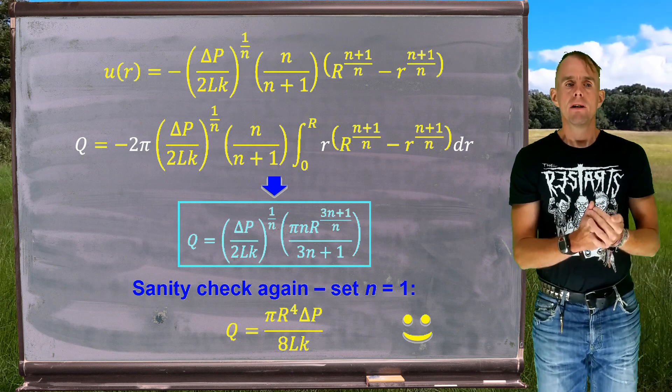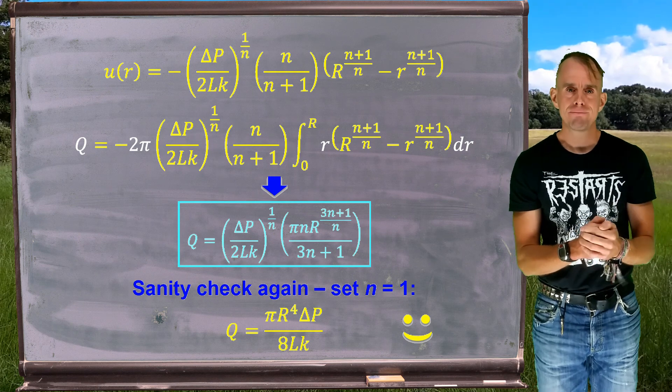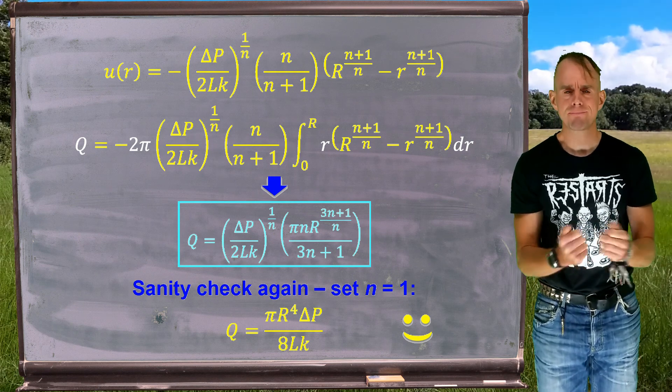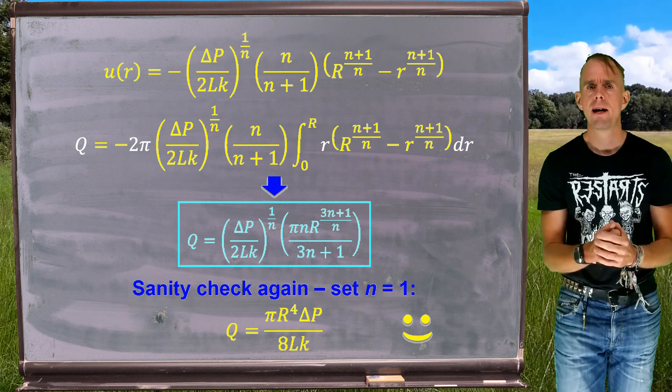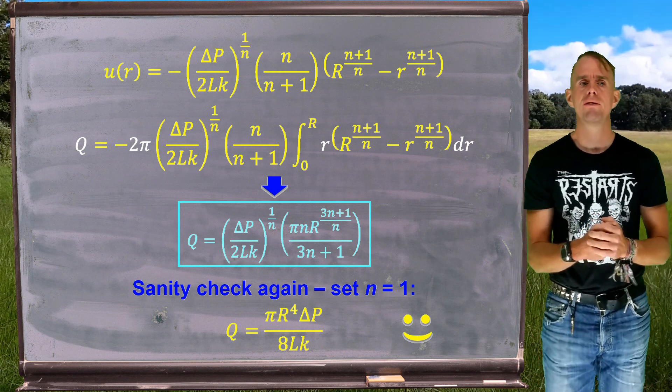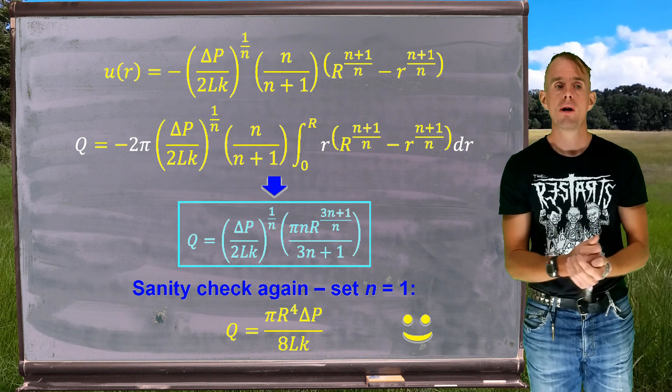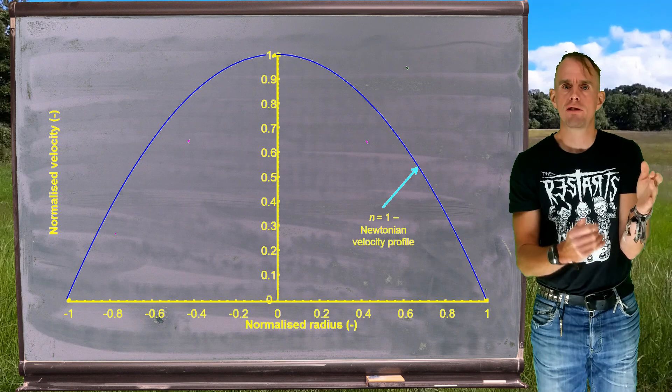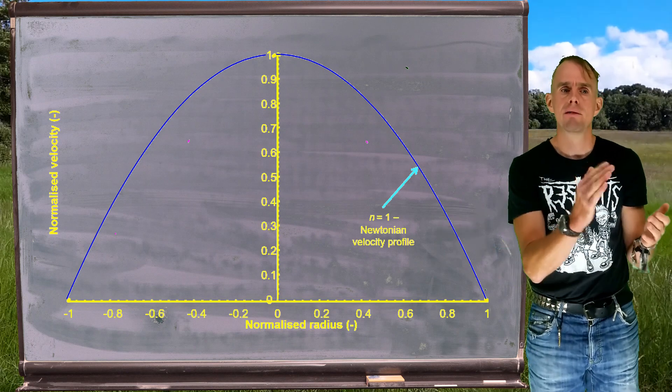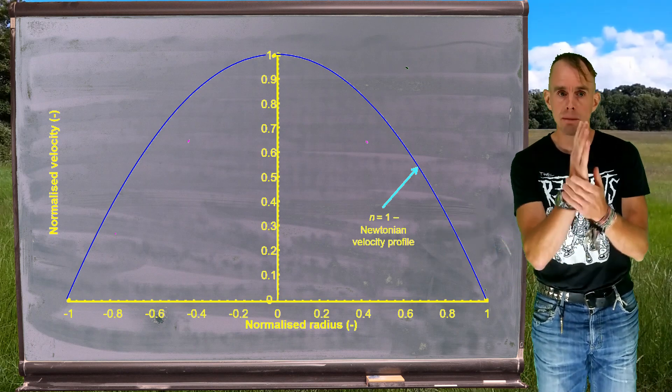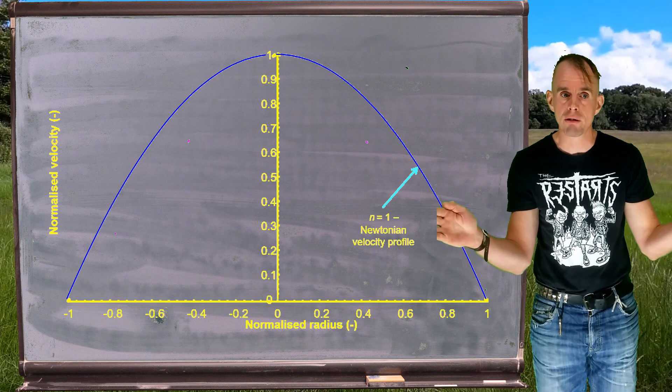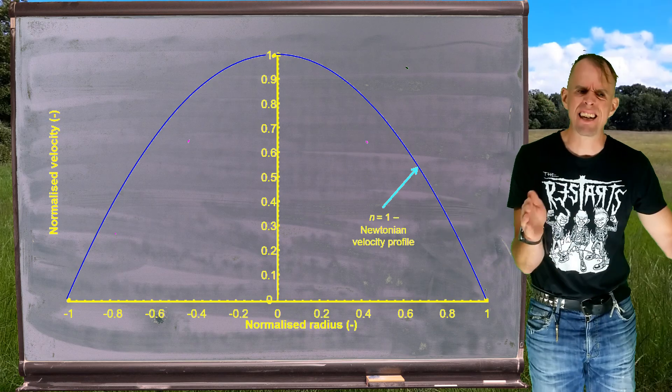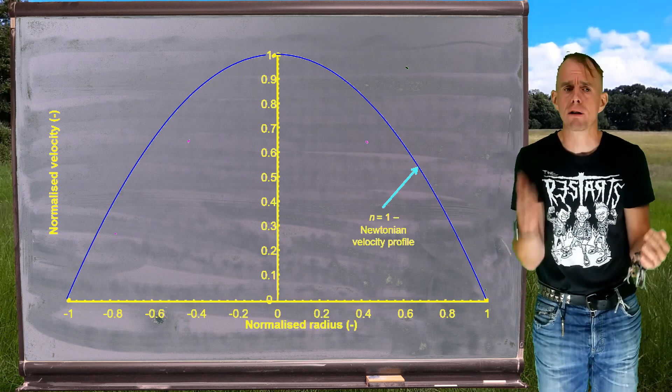Great. So we have a velocity field. We have a volumetric flow. So what does this actually mean for us? Let's have a look to start with at the form of what the velocity field looks like. So here on the blackboard now, what I have is a plot of a normalized velocity, which is the velocity at any radius divided by the maximum velocity. So in the middle, it's 1, and at the outer edges, it's 0, as a function of normalized radius, both going in the positive and negative direction, if you like. So we get the full profile.